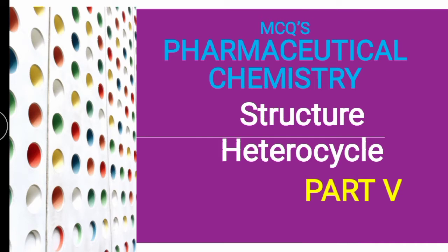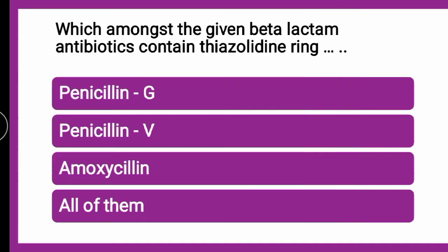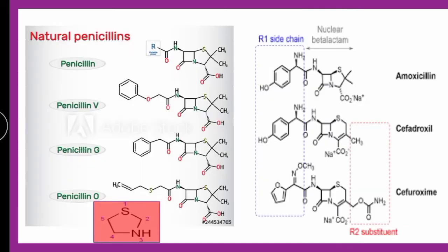The first question from part 5 is: Which amongst the given beta-lactam antibiotics contains a thiazolidine ring? Whether it is Penicillin G, Penicillin V, Amoxicillin, or all of them? The correct answer is all of them. Amongst the given beta-lactam antibiotics, all of these contain the thiazolidine ring. If you look into the structure, thiazolidine — 'thia' for sulfur, 'aza' for nitrogen — is the saturated form. 'Ole' is for five-membered and 'olidine' is the saturated form.